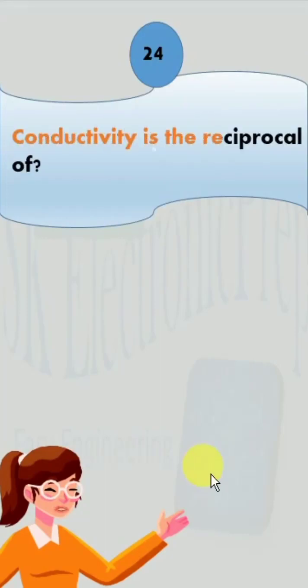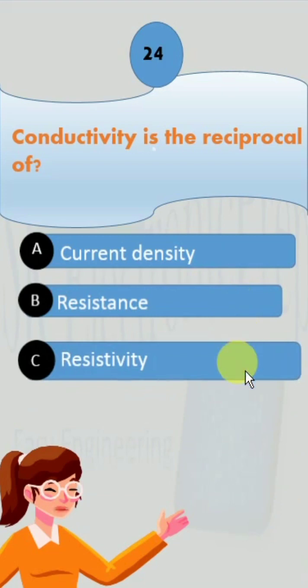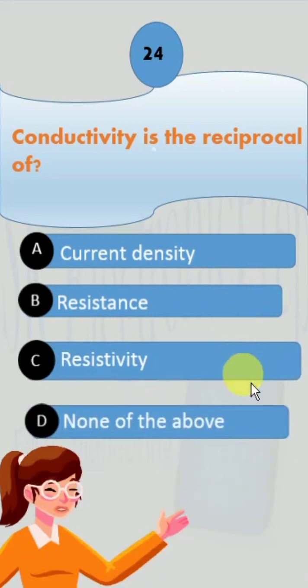Conductivity is the reciprocal of: option A, current density; option B, resistance; option C, resistivity; and option D, none of the above.